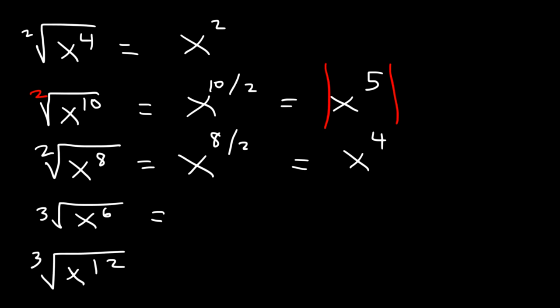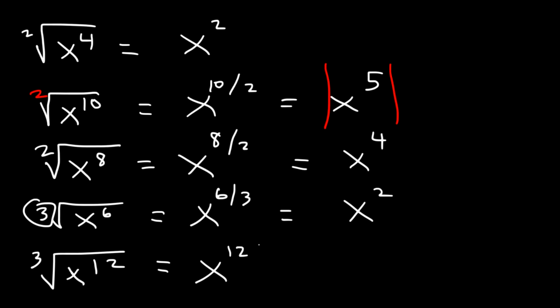The cube root of x to the sixth: that's x to the sixth divided by 3, which is x squared. If you have an odd index number, you don't need to use absolute value notation. Negative and positive numbers can work inside a root with an odd index number. And 12 divided by 3 is 4, so we don't have to worry about it.